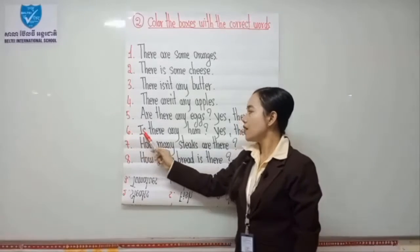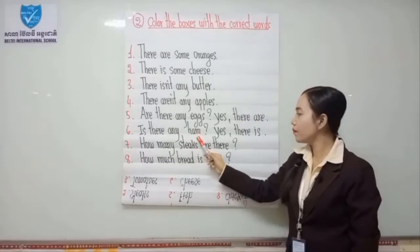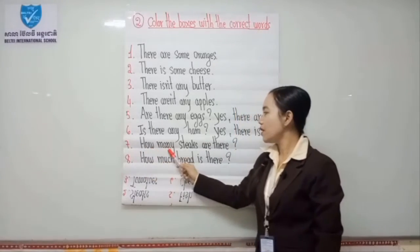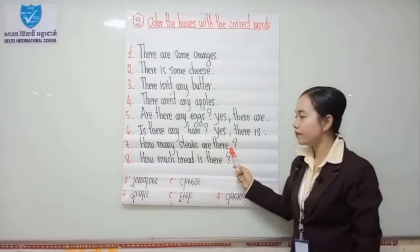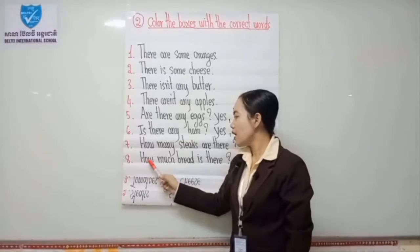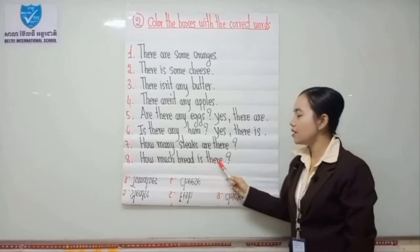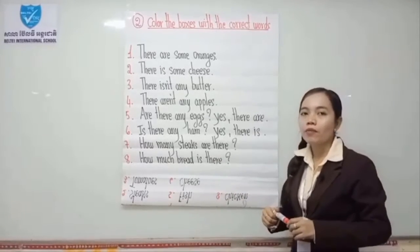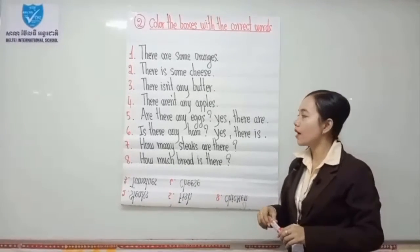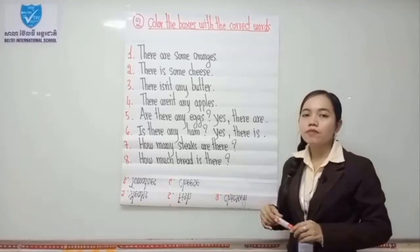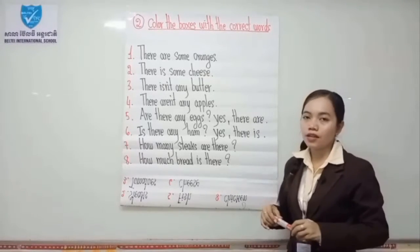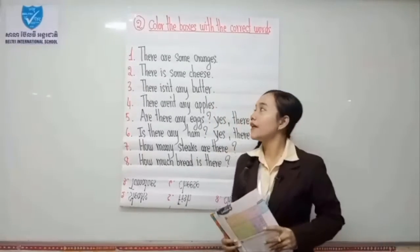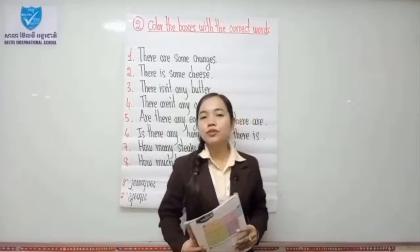Number 6: is there any ham? Yes, there is. Number 7: how many steaks are there? Number 8: how much bread is there? The answers are on the whiteboard — you can compare your answers with mine. If someone made an error, you can correct it. Exercise number 2 is finished.